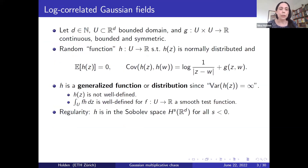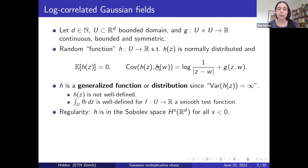To define a log-correlated Gaussian field, we let d be some natural number, U be some bounded domain in R^d, and g be some function on U times U which is continuous, bounded, and symmetric. Heuristically speaking, a log-correlated Gaussian field is a random real-valued function h defined on U such that for any point z in U, h(z) is normally distributed with mean zero, and h(z) and h(w) have a covariance given by g, where we assume g has been chosen such that the right-hand side is positive definite.